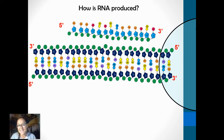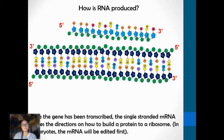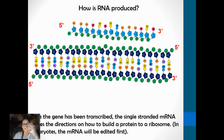Once the gene has been transcribed, the single-stranded mRNA carries the directions on how to build a protein to a ribosome. We've basically taken that gene and copied it into a disposable nucleic acid. Our chromosomes need to be kept safe in our nucleus, but RNA — you can just keep making more copies. You can think of it as a disposable messenger. Once it's read in translation, it can be broken apart back into individual nucleotides.